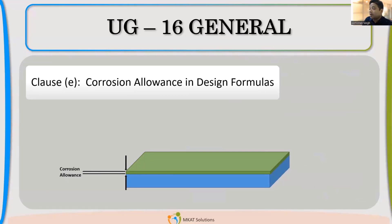Now, there is an interesting clause. When you see it, you might not be able to appreciate that clause, which is UG 16E, but it is a very, very important clause. What it says is that whatever design formulas are given in the code are in corroded condition.